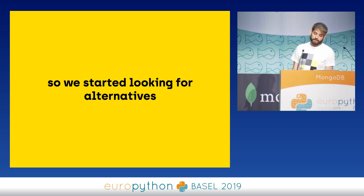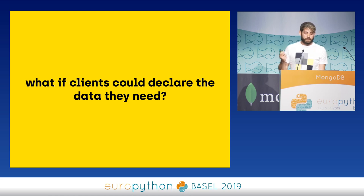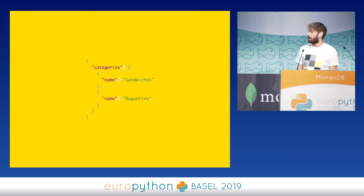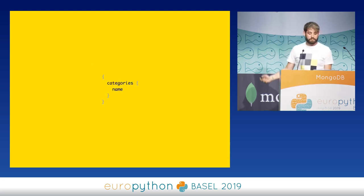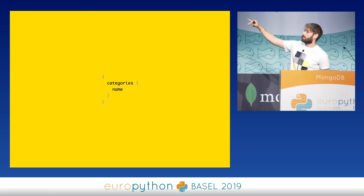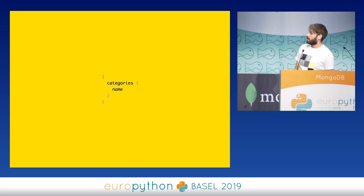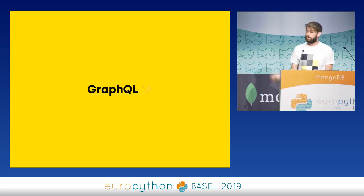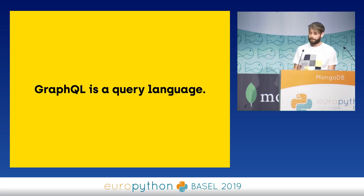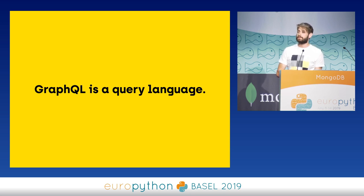So we started looking for alternatives — what if the clients could declare the data that they need? For example, a client needs a list of categories and for each category it needs a name. We could send a document like JSON but without the values, and the backend would respond with exactly that data. This is basically what GraphQL is. GraphQL is a query language created by Facebook in 2012 and then released as open source in 2015.